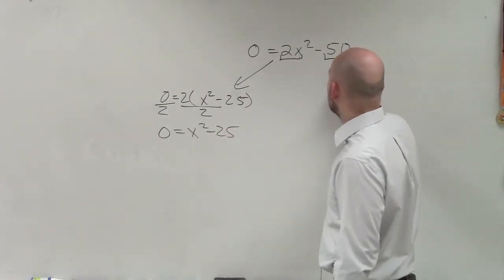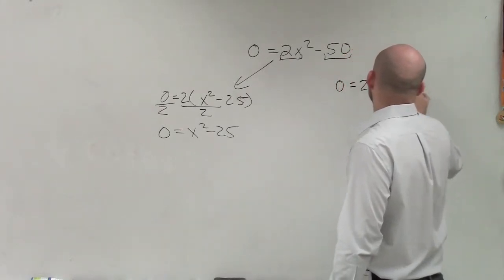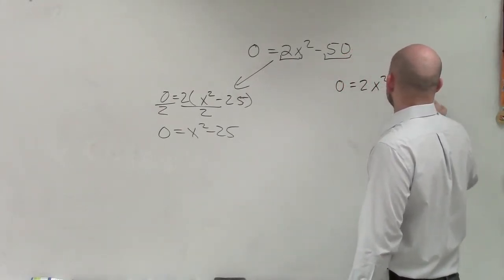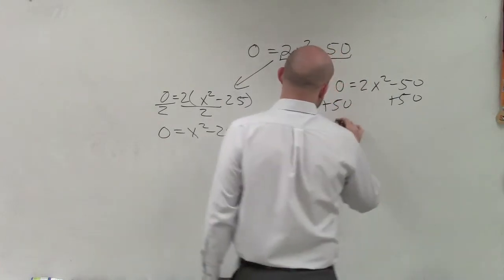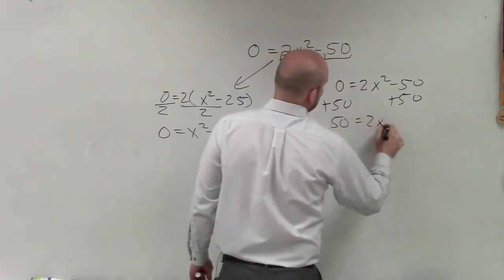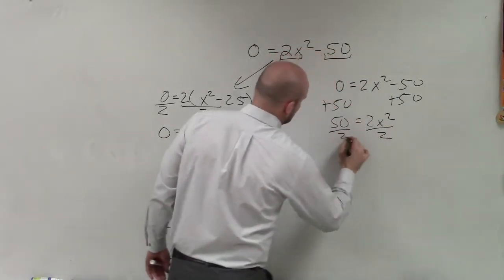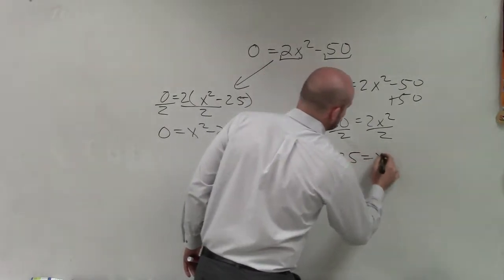Let's just go through the problem without factoring out the 2. What I'd do here is I'd add 50 over here, and I'd have 50 equals 2x squared. Then I'd divide by 2, and I have 25 equals x squared.